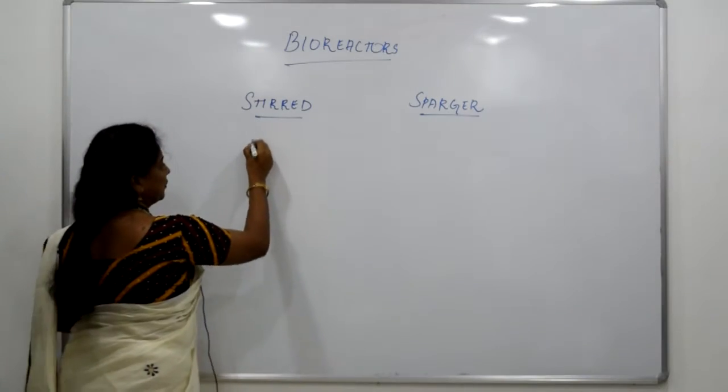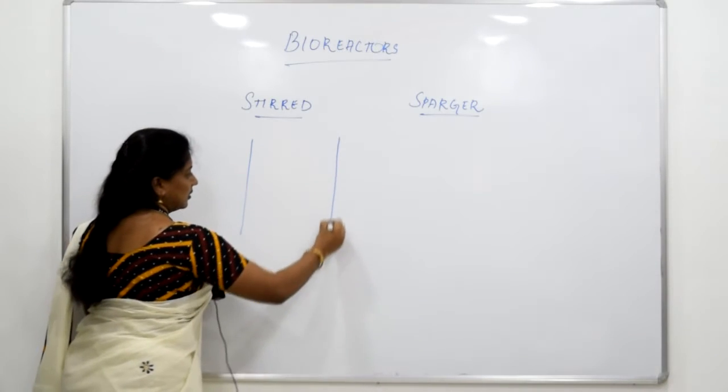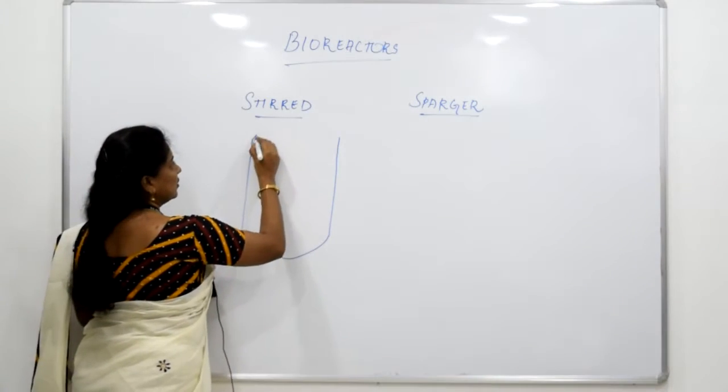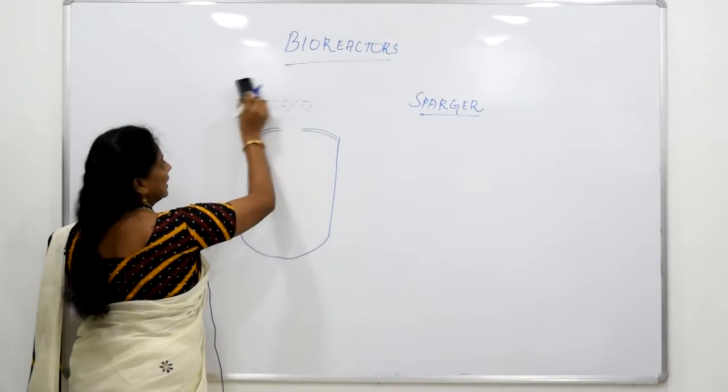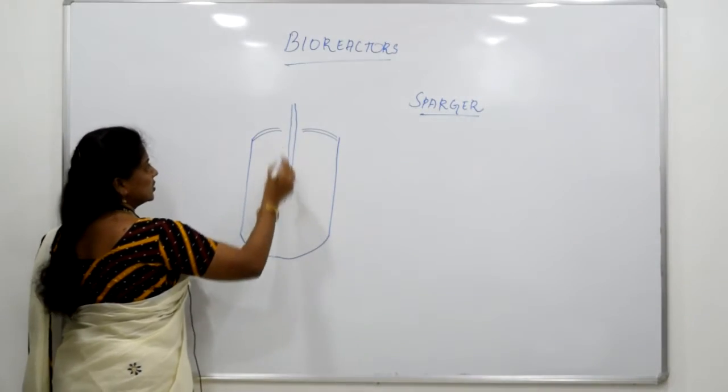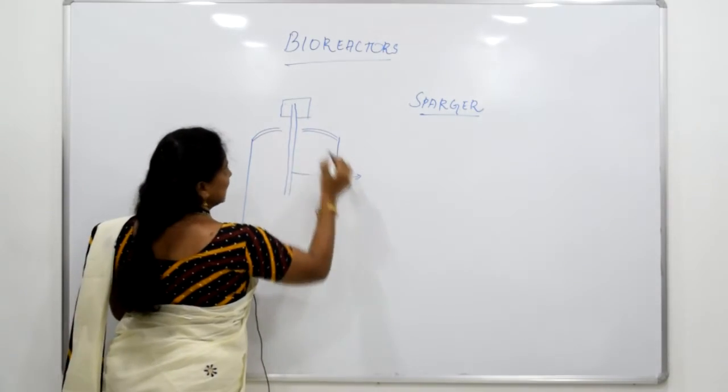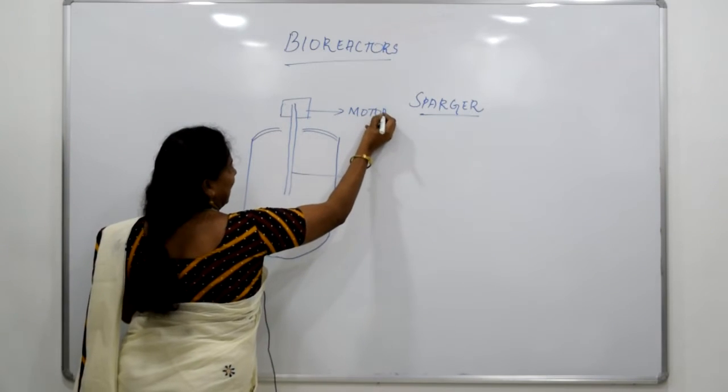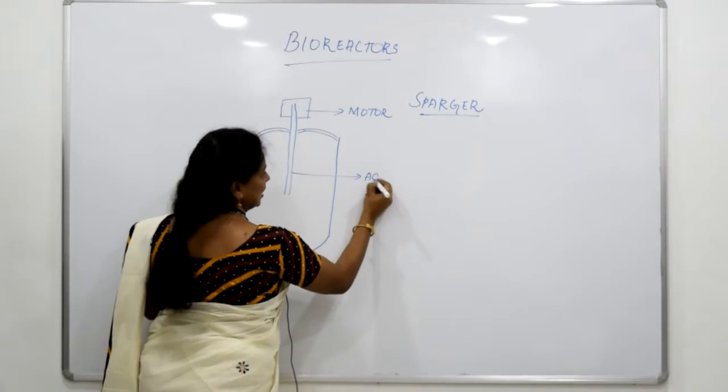When you are working on stirred type of bioreactors, this is the actual make of the bioreactor. It should have a curved bottom and the top will be having a flange which is just looking like this, and it will be connected to a motor with an agitator shaft. This is called as the agitator shaft which is connected in turn to a motor. This will be the top flange and this will be the agitator shaft.